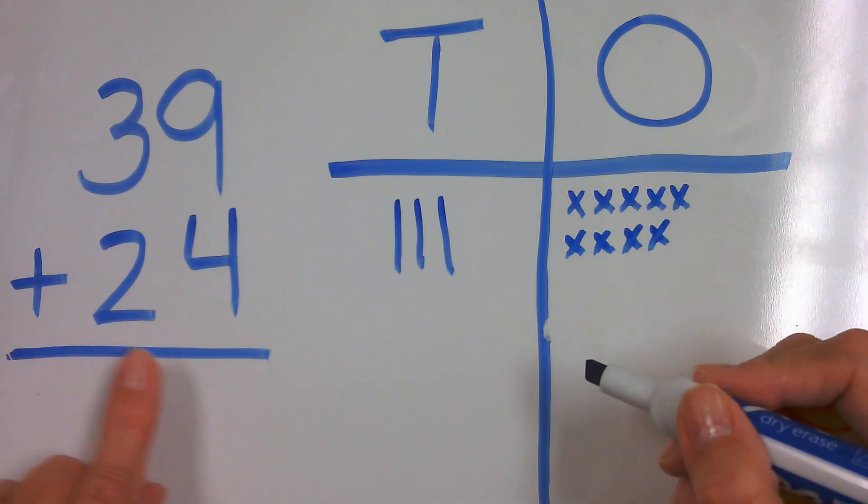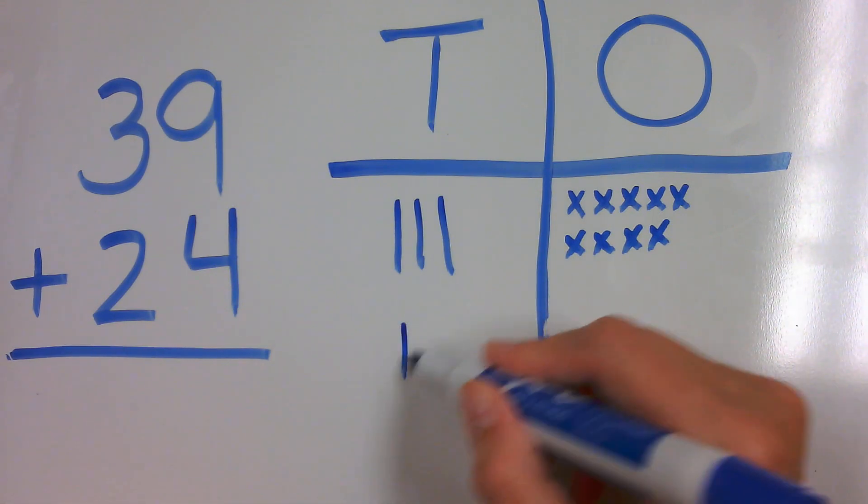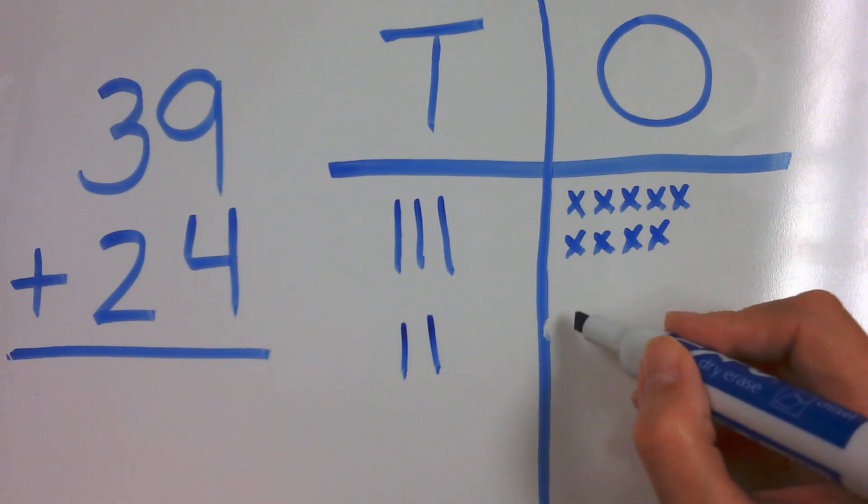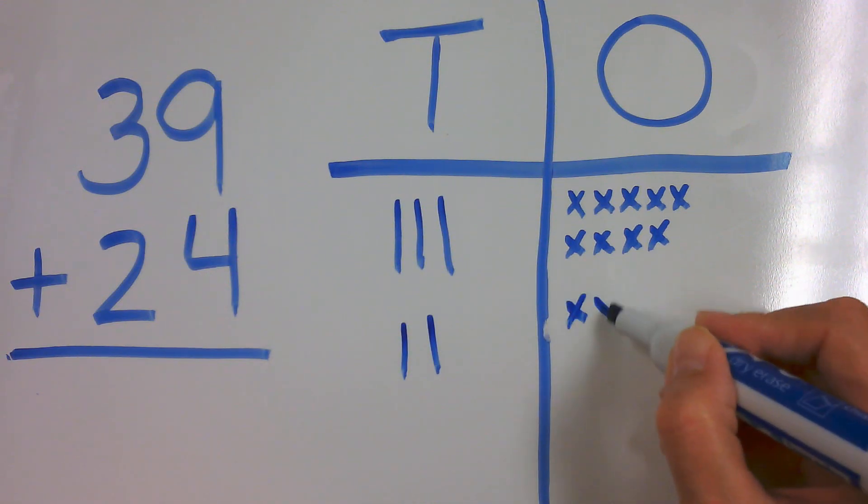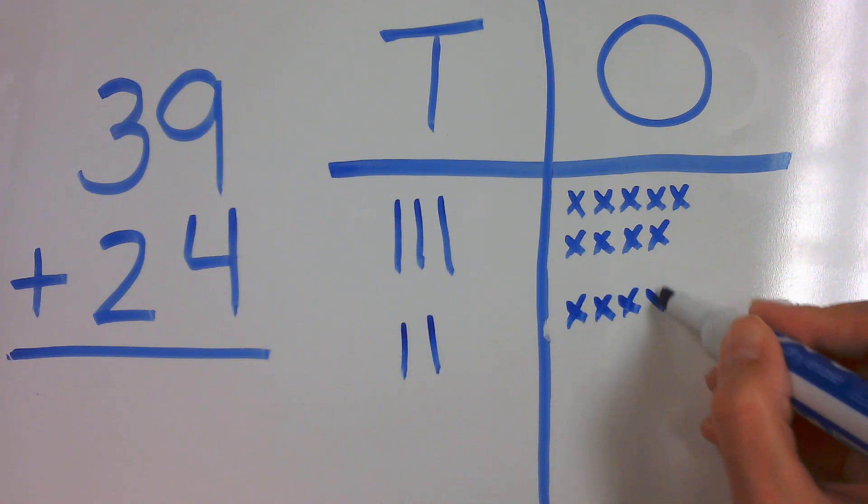Now I'm going to make the number 24. So I have two tens and four ones. One, two, three, four.